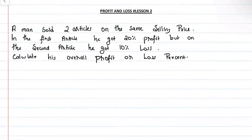Profit and Loss Lesson No. 2. First question: A man sold two articles at the same selling price. In the first article he got 20% profit, but on the second article he got 10% loss. Calculate his overall profit or loss percent.